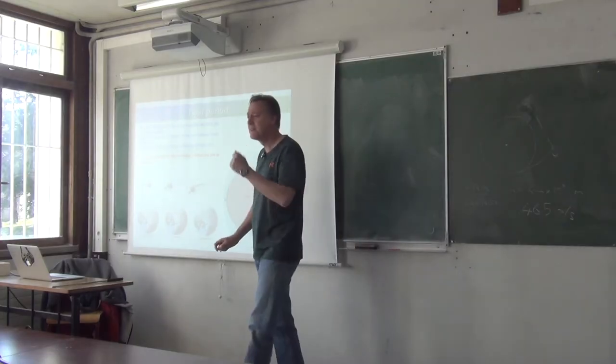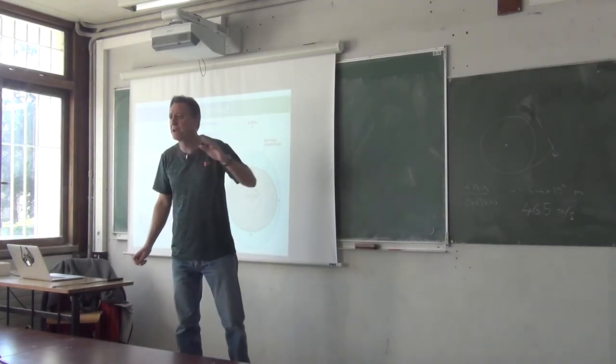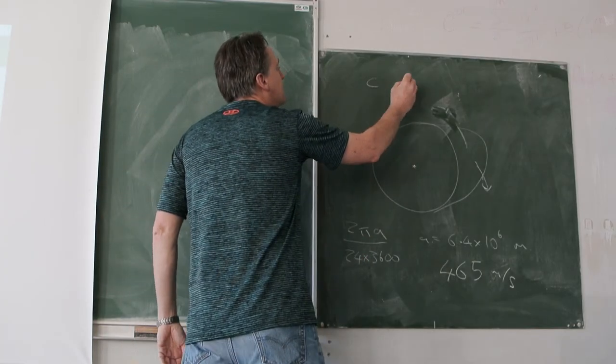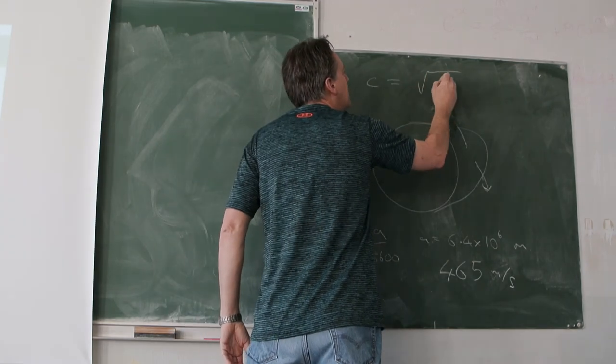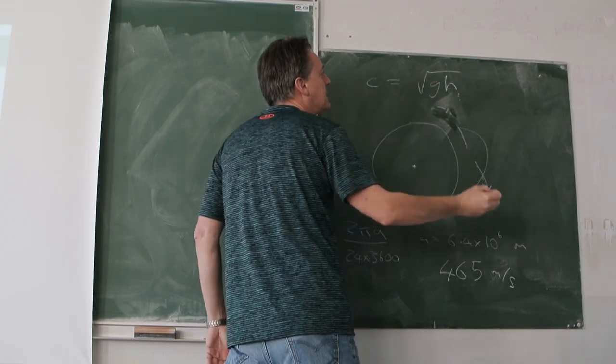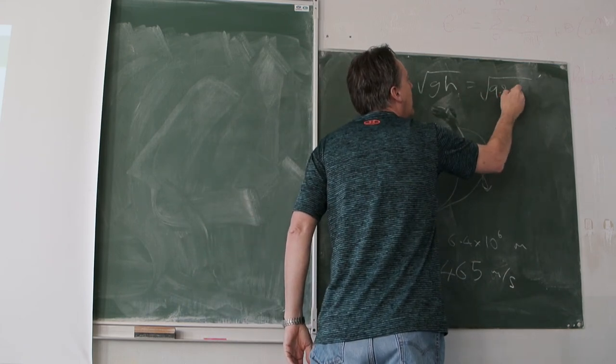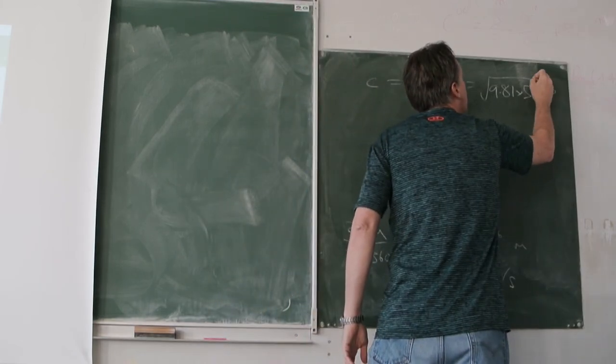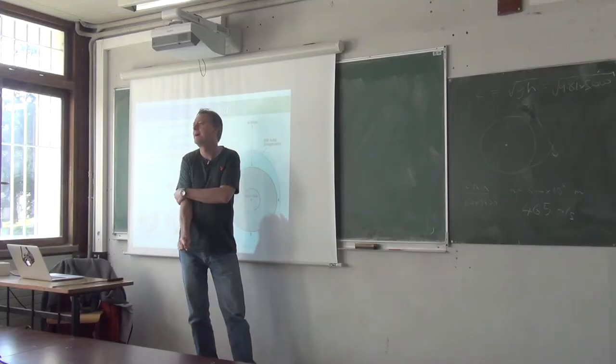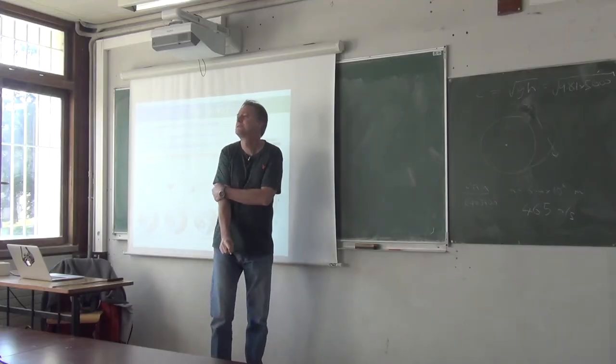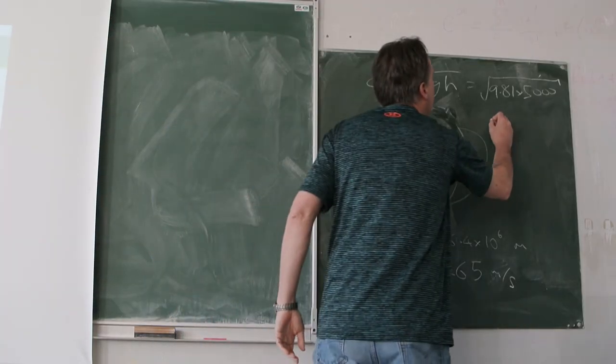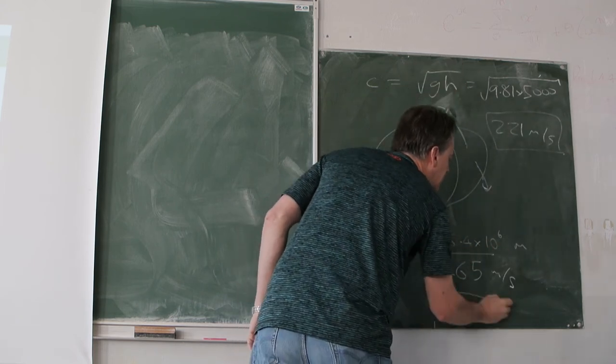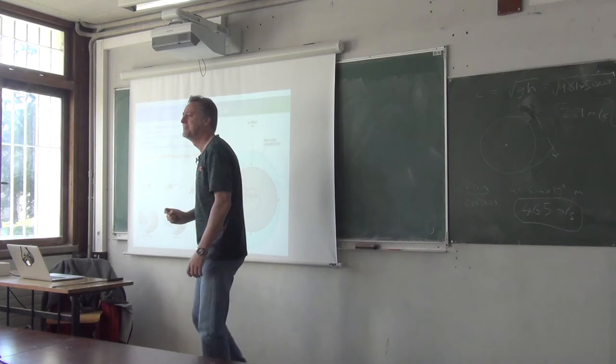465 metres per second. Is that possible? Can a wave go that fast? How fast does a wave go? It's a shallow water wave because it's a very large scale. The ocean is 5 kilometres deep, so we've got the phase speed is equal to root GH. Which is equal to the square root of 9.81 times, what's the depth of the ocean? 5 kilometres, so 5,000. Somebody do that for me. 221. 221 metres per second. All right, so compared to 465 metres per second, it's not going to keep up, is it, at the equator?